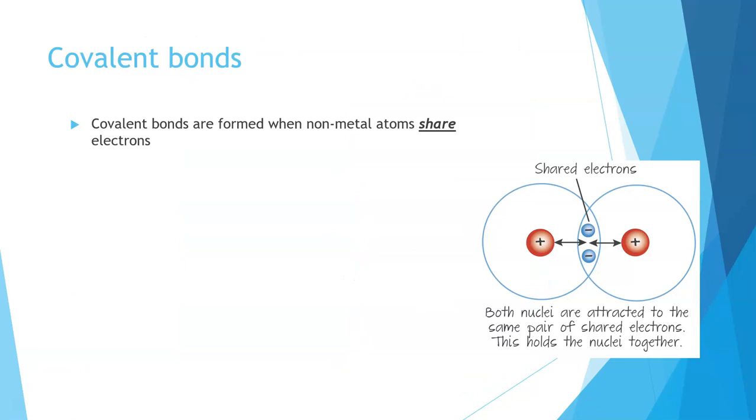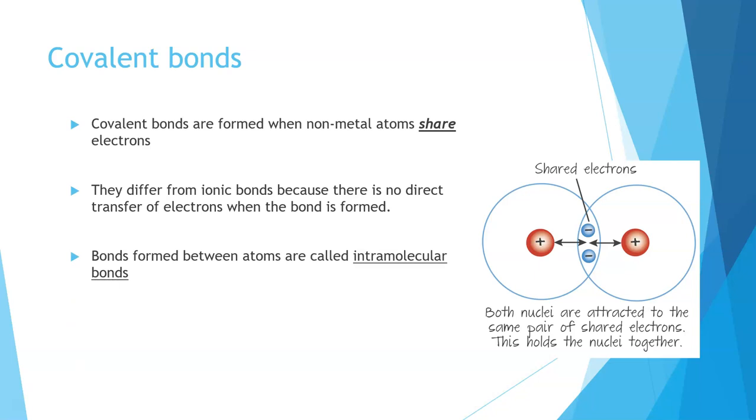Covalent bonds are formed when non-metal atoms share electrons. They differ from ionic bonds because there's no direct transfer of an electron from one atom to another. The electrons are attracted equally, or sometimes equally and sometimes not, to the nuclei of the atoms involved in the bond. Because this sits within the bond, we call it intramolecular.